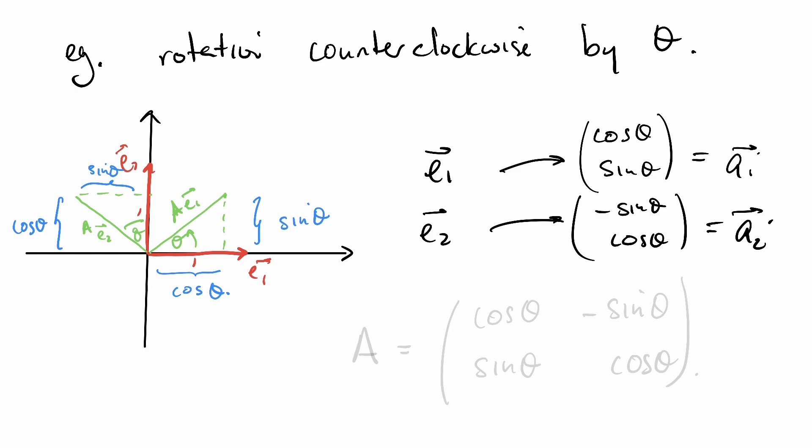Together, they make up the columns of the matrix that represents this linear transformation. So A is going to be cos theta, sin theta, negative sin theta, cos theta. This is the matrix that represents the linear transformation that is rotation counterclockwise by the angle theta.